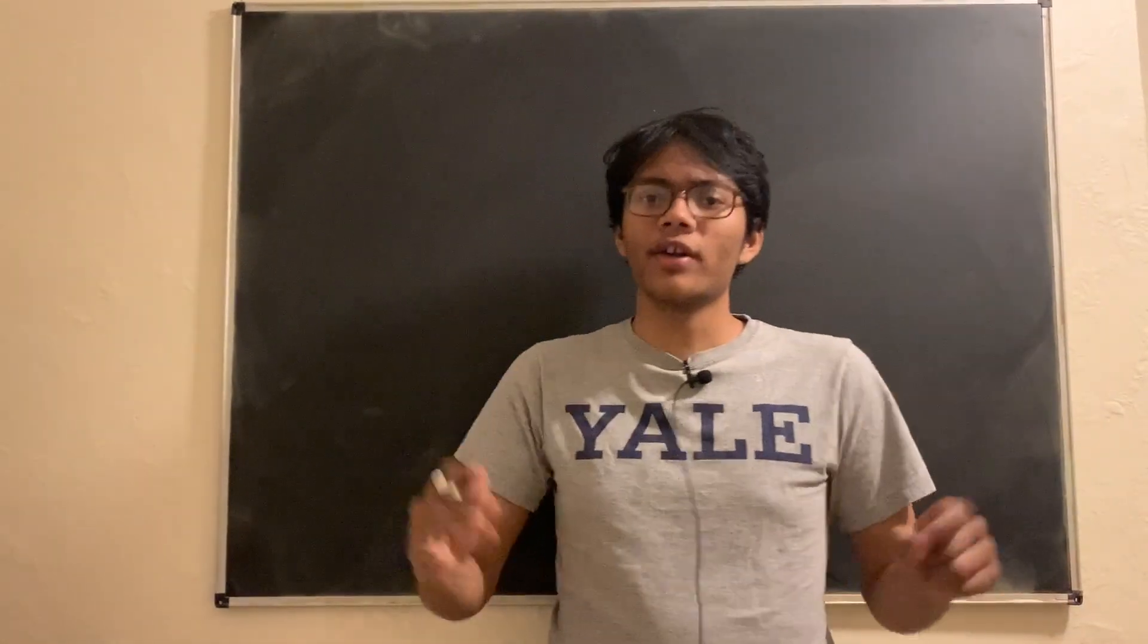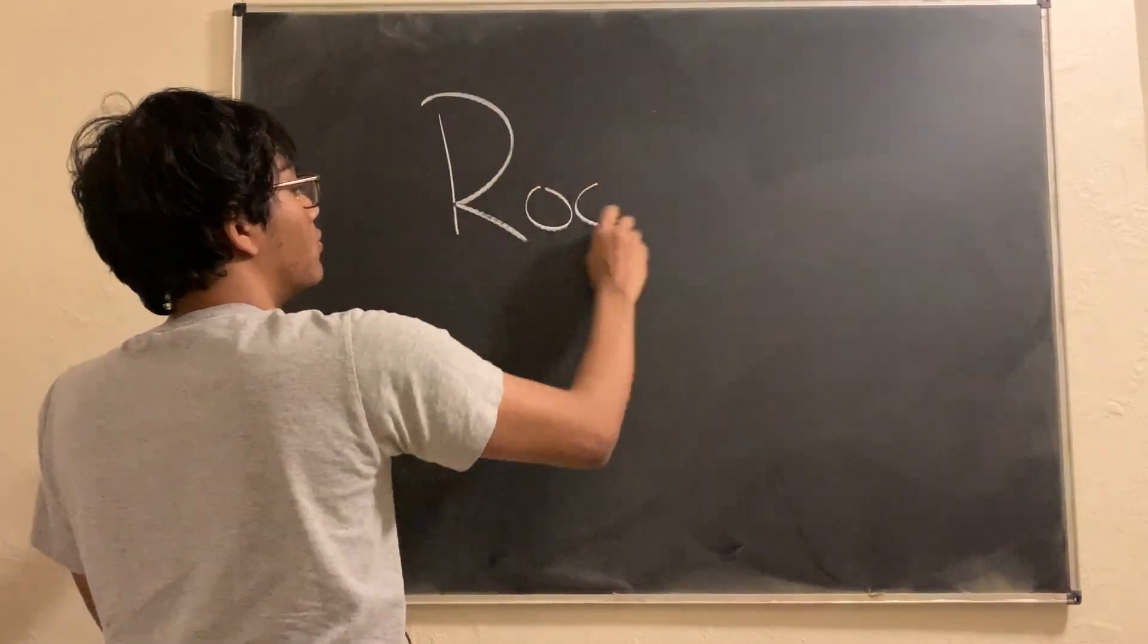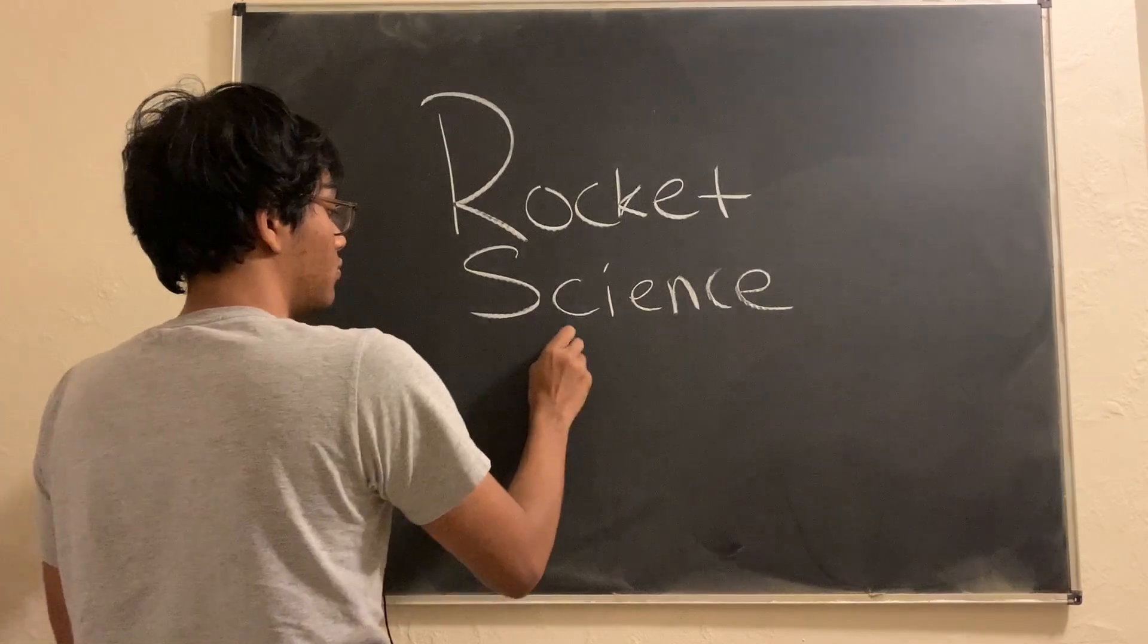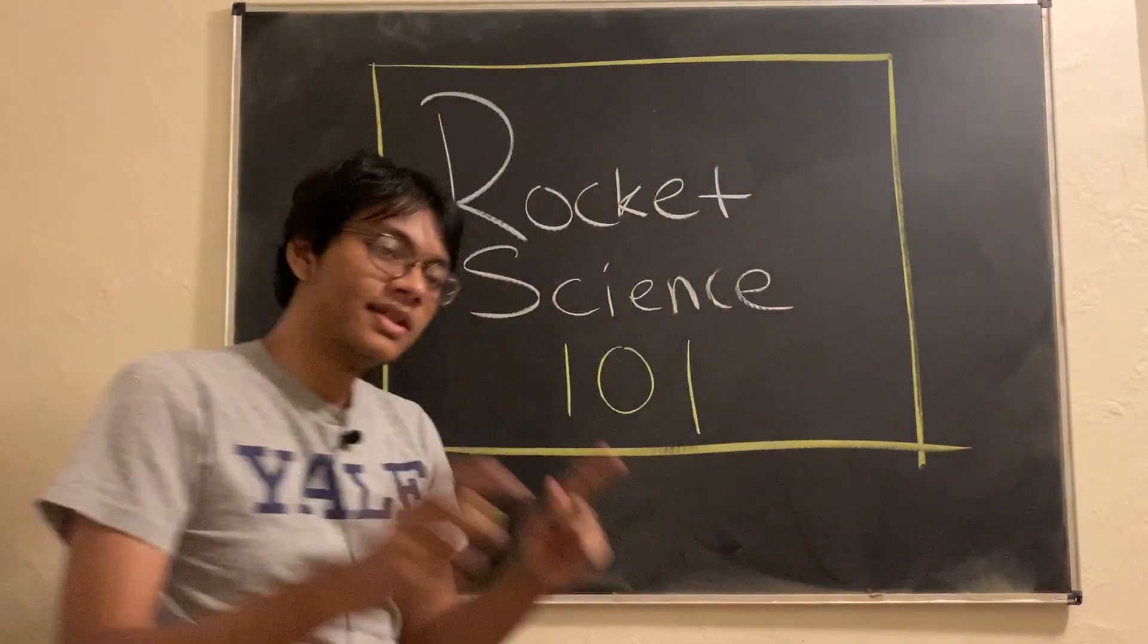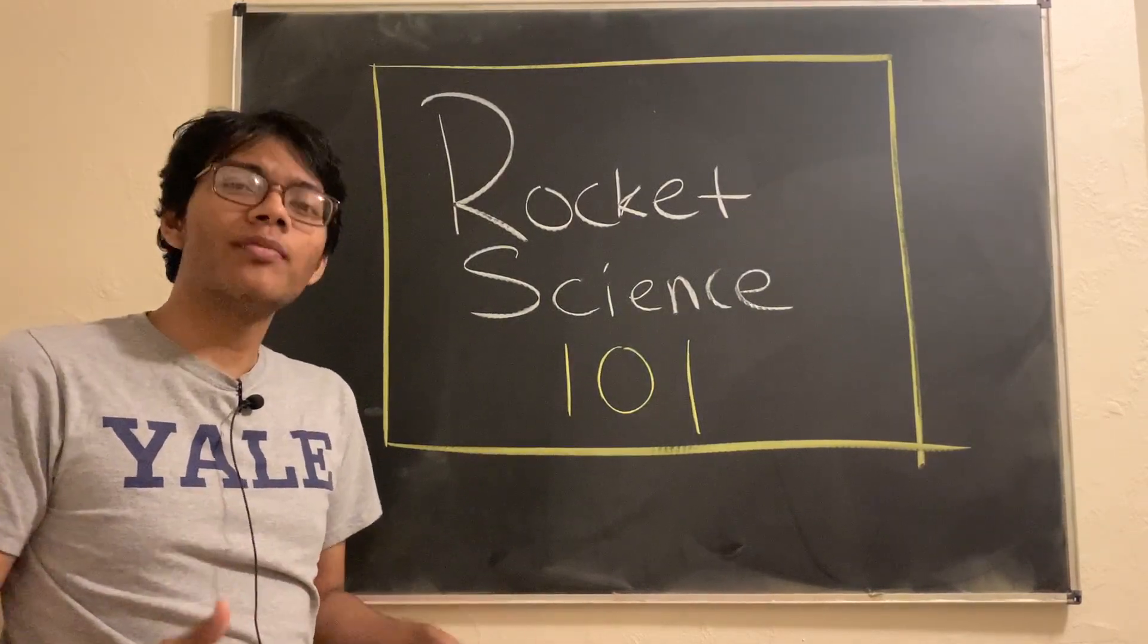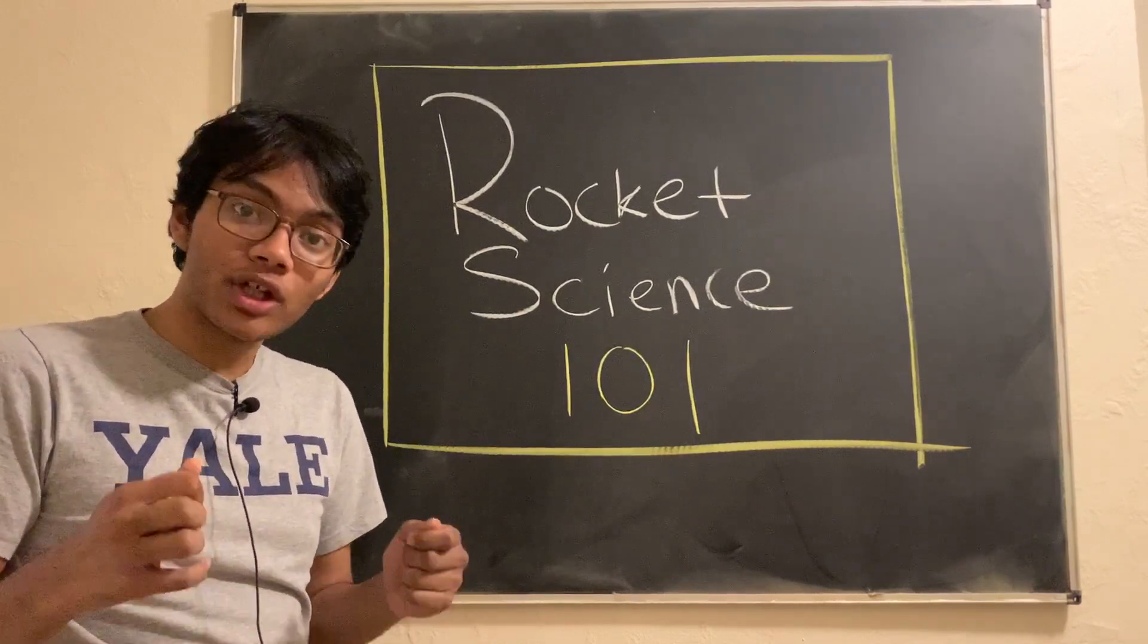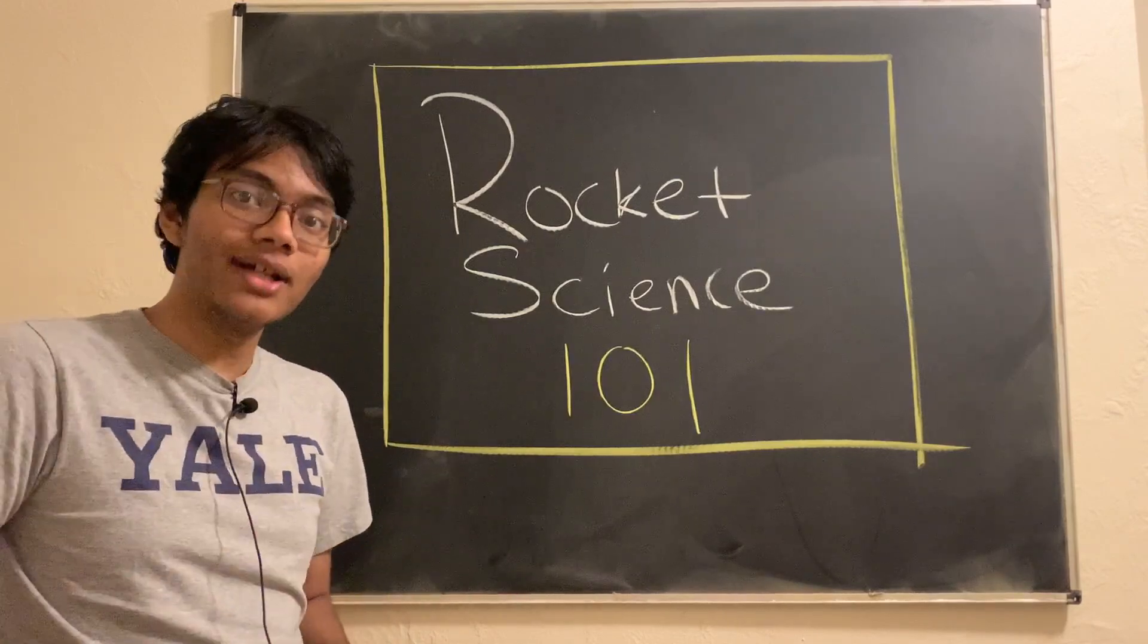Welcome folks to Rocket Science 101. Today, we're going to derive the rocket equation that tells us how much propellant, how much fuel we need to carry for a given delta V or a given amount of mass. Let's go ahead and check it out.